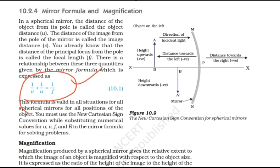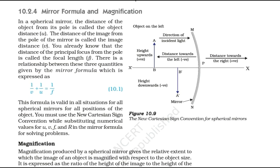So we need to understand the mirror formula, which has three variables: u is object distance, v is image distance, and f is focal length.